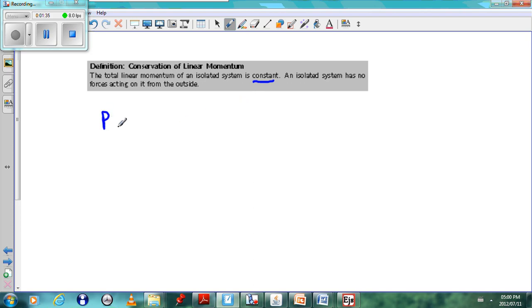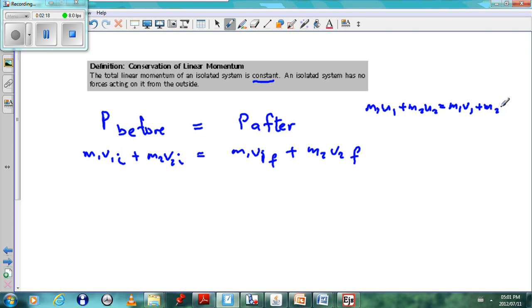The equation that goes with this is usually P before equals P after. So your momentum before in most cases is M1 V1 initial plus M2 V2 initial equals M1 V1 final plus M2 V2 final. In the old system we said M1 U1 plus M2 U2 equals M1 V1 plus M2 V2. That is also applied, but not in our context.